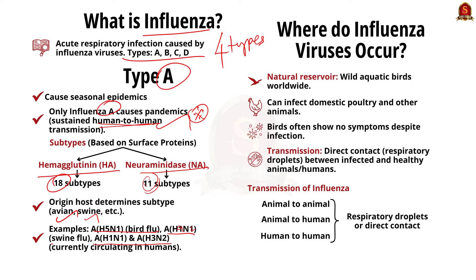All animal influenza type A viruses are distinct from human influenza viruses and do not easily transmit among humans, though there is still a chance of transmission. These viruses occur naturally among wild aquatic birds worldwide and can infect domestic poultry and other animal species. Aquatic birds are the primary natural reservoir for most subtypes of influenza A viruses. Wild aquatic birds can be infected with avian influenza A viruses in their intestines and respiratory tract but usually do not get sick.